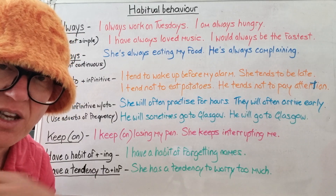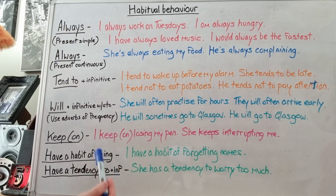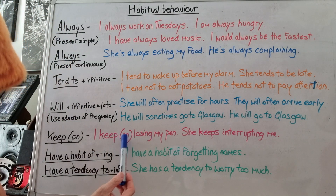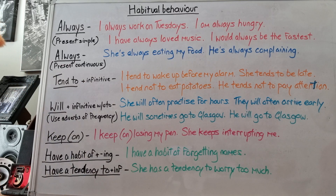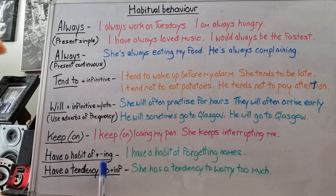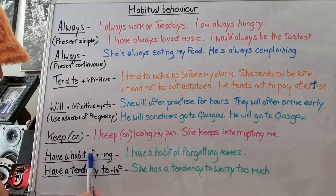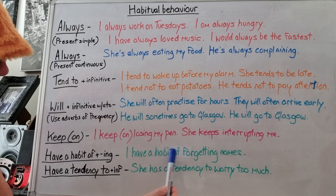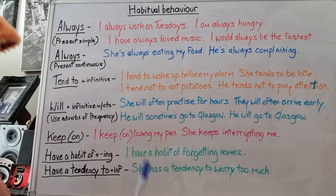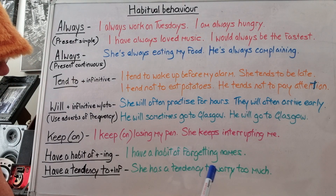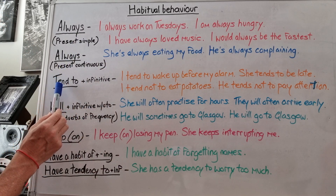We use '-ing' because this is a preposition — even if you don't use 'on', it's implied. Now: 'have a habit of' plus '-ing', and 'have a tendency to do something' — these mean the same thing and describe bad, negative habits. I have a habit of forgetting names — 'of' plus '-ing', because this is a preposition. She has a tendency to worry too much — again, a bad habit. Tendency is the noun form of the verb 'tend'.